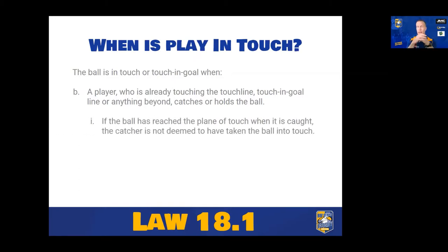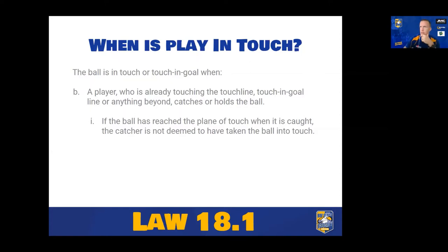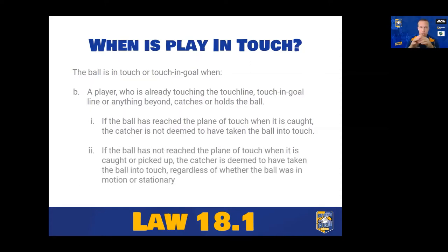If the ball has reached that plane — that vertical space going up — and it is caught, the catcher who is already in touch has not taken the ball into touch themselves. So if you're in touch already and the ball has reached that plane of touch, you're not the one that put it out. However, if the ball hasn't reached the plane of touch — if it is still above the field of play — and it's caught or picked up, then the person who picked it up has taken it across that plane of touch, and they are the one who has taken it into touch.